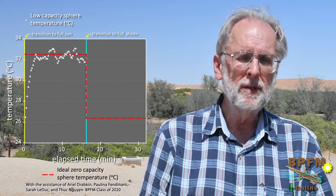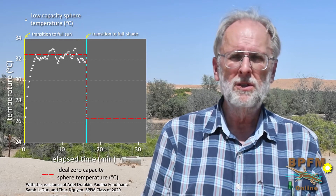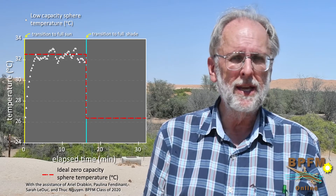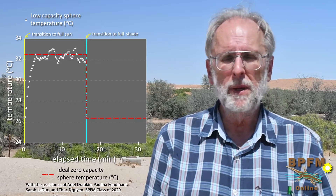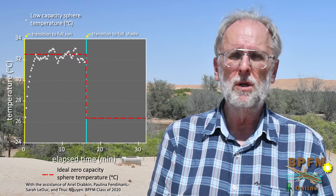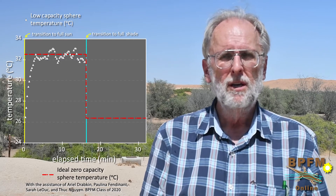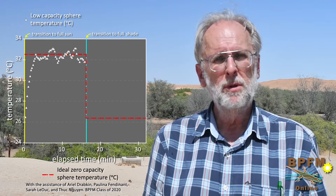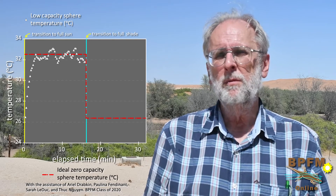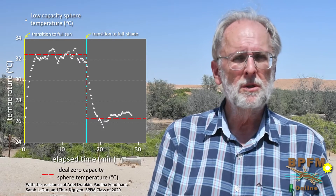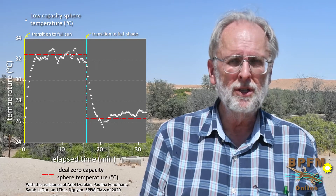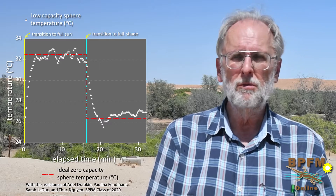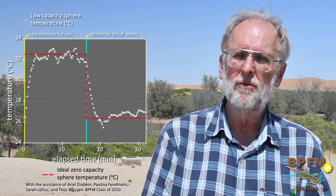Note also how rapidly this temperature fluctuates. The sky was clear that day, so radiation input was pretty steady. These temperature fluctuations are therefore due to variations of wind speed and hence convective heat loss. The low capacity ball is pretty close to what we expect for an operative temperature device — rapid response and rapid approach to thermal equilibrium. When the balls are put into full shade, we see a similar abrupt decrease of temperature, falling to equilibrium somewhere between 26 and 27 degrees Celsius, with similar rapid fluctuations of temperature with variation of wind speed.